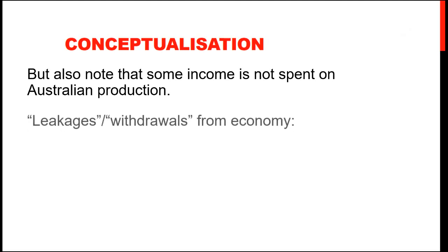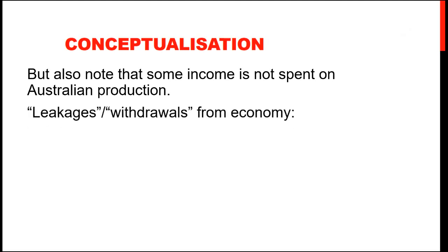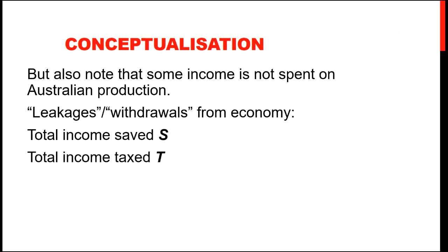But of course that can't be the end of the story, because not all income generated by the production of goods and services is spent on Australian production. Some of that income leaks out and is not spent immediately on Australian goods and services. For example, households will spend some of their income on goods and services, but they'll also save some of it. Furthermore, those households will be taxed before they even get to spend some of their income.